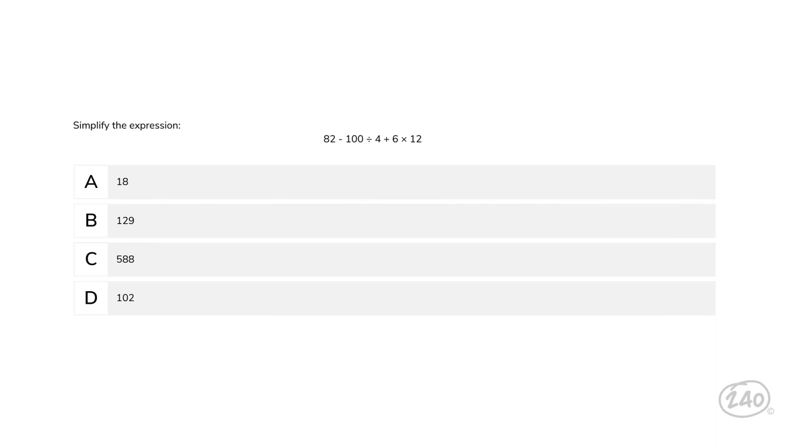Simplify the expression: 82 minus 100 divided by 4 plus 6 times 12. As we start to run through PEMDAS, there are no parentheses or exponents in this expression, so we can skip those steps. Then we move on to multiplication and division from left to right.